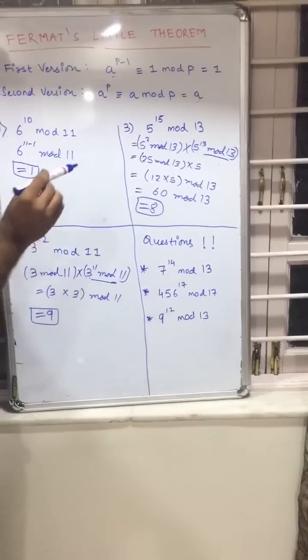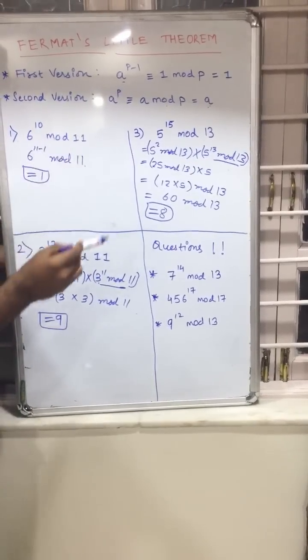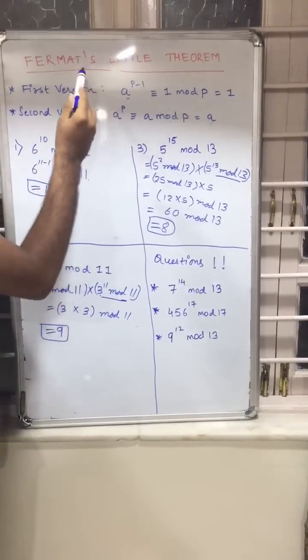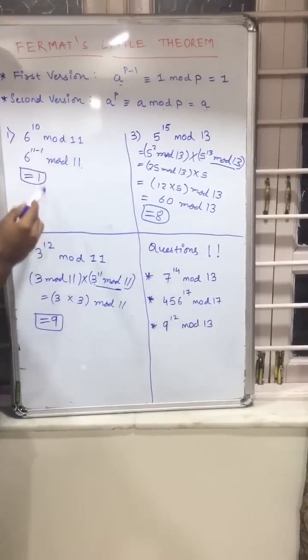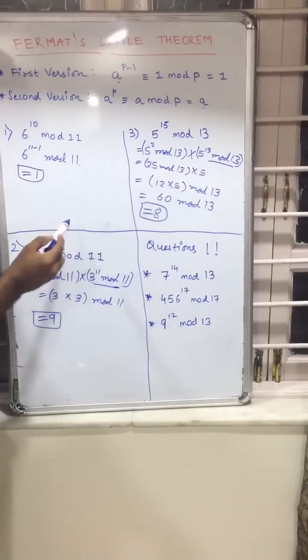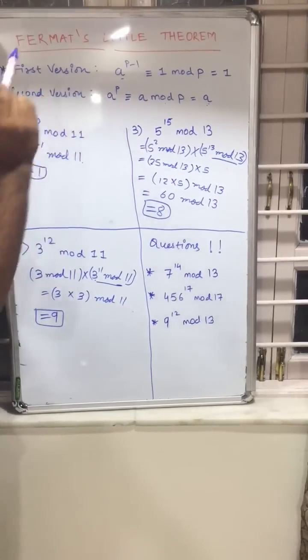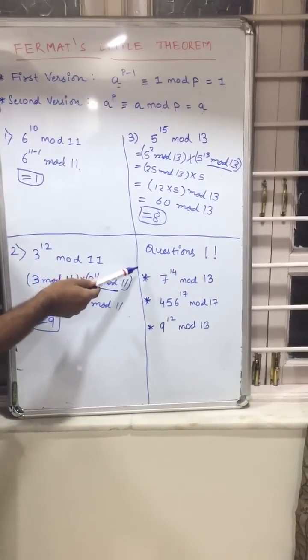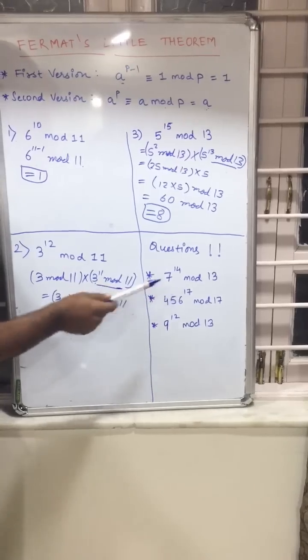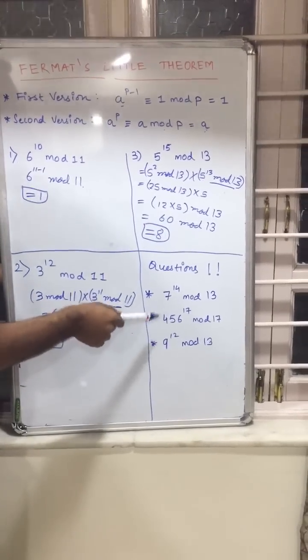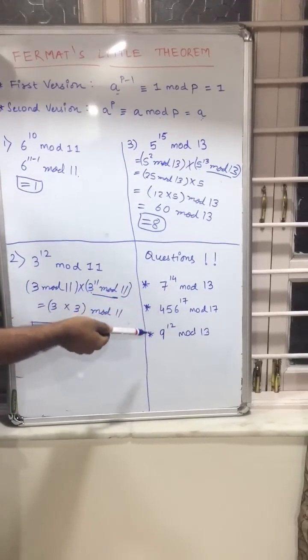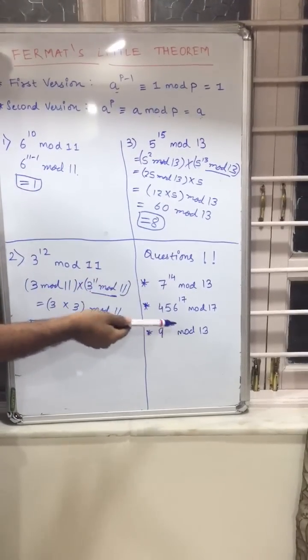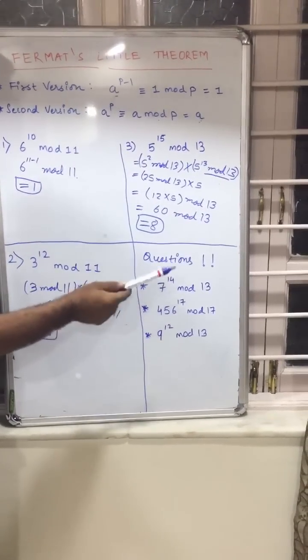So now I think that you guys are clear on what is Fermat's Little Theorem, what is first version, what is second version. We have solved these three examples having the usage of both the versions. So now we would like to give you these three examples to do it by your own, and if you find any difficulty in solving this you may ask us for help. We will be happy to help you. Do comment in our comment section. Thank you.